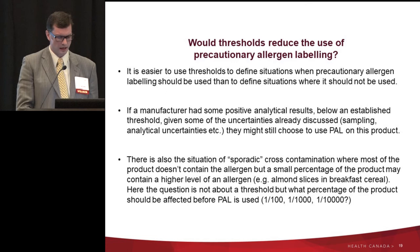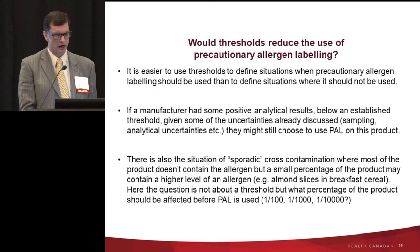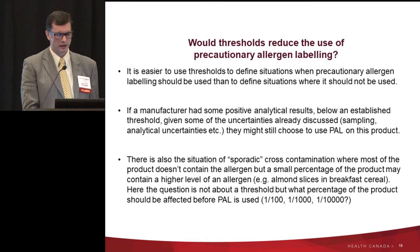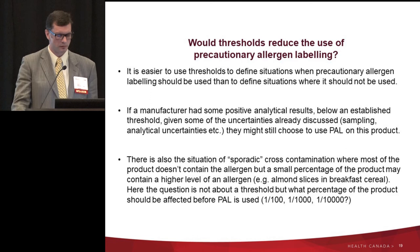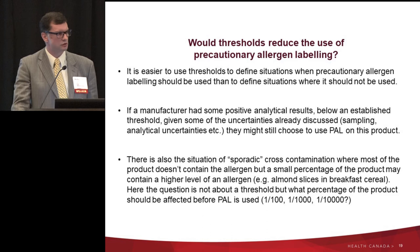A highly related question is the use of precautionary allergen labeling. If we could set a regulatory threshold, food manufacturers could use it to decide whether to put a precautionary 'may contain' statement on their foods — applying it when testing shows levels above the threshold, and omitting it when levels are consistently below. However, it's much easier to use thresholds to define when precautionary labeling should be used than to define when it should not.